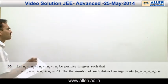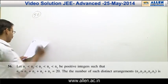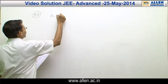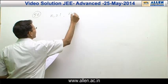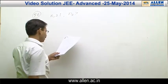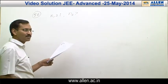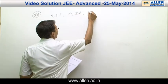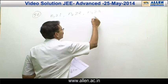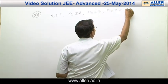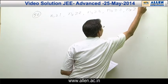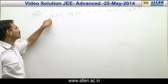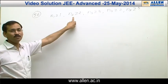Question number 56. The given constraint says n1 is greater than or equal to 1, and since n2 is greater than n1, n2 is greater than or equal to 2, n3 is greater than or equal to 3, n4 is greater than or equal to 4, and n5 is greater than or equal to 5. So the least value of n1 is 1, but the least value of n2 will be 2.